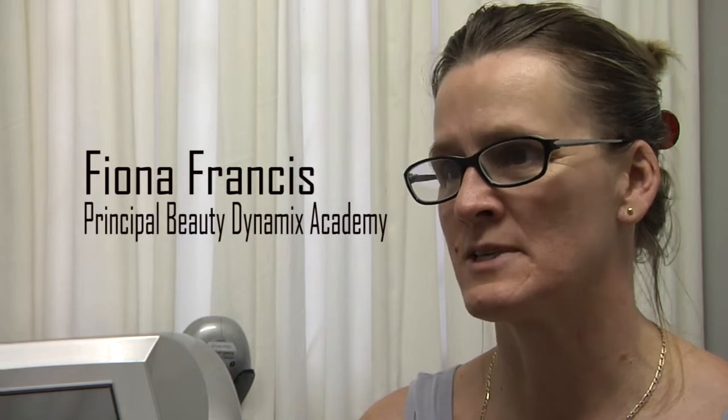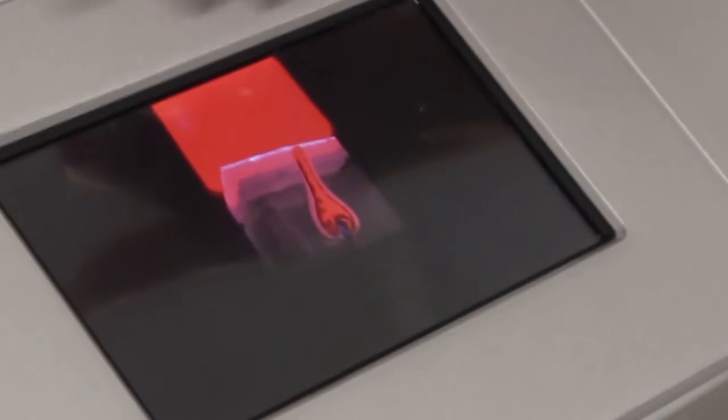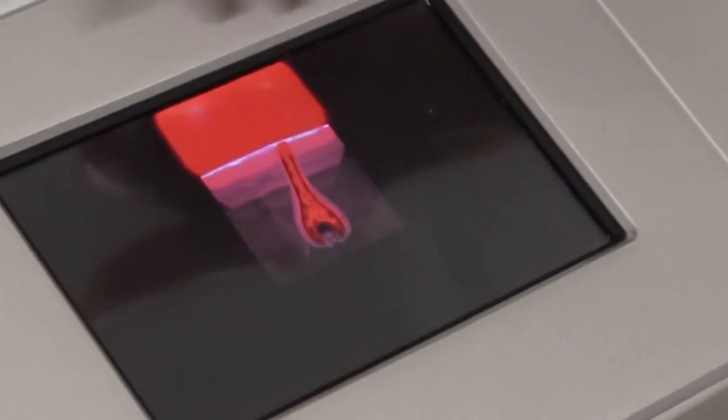For hair removal, the laser has a light, a crystal head, and the light picks up the pigment under the skin of the hair. It gets carried through to the follicle and slowly suffocates the follicle.